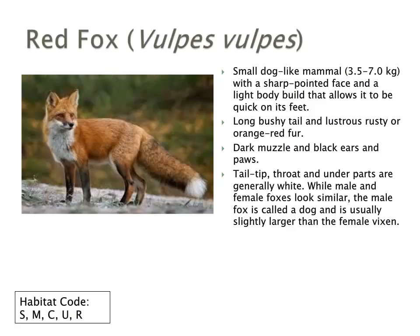The red fox is a small dog-like mammal, and as we've seen earlier, there are different colour morphs of this species. The long bushy tail is lustrous rusty red-orange. It has a dark muzzle, black ears and paws, while the tail tip, throat, and underparts are generally white. The male is called a dog and the slightly larger female is called a vixen.